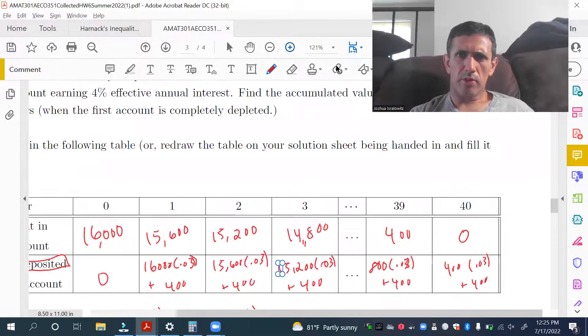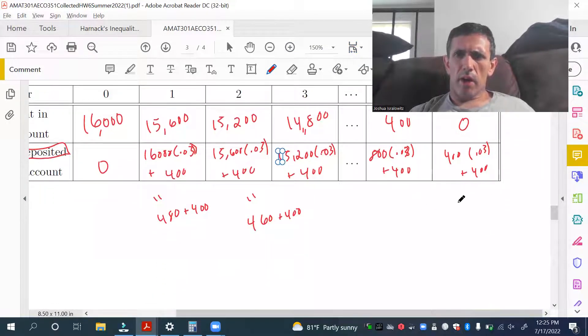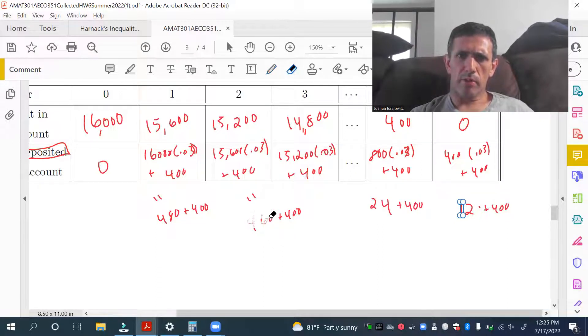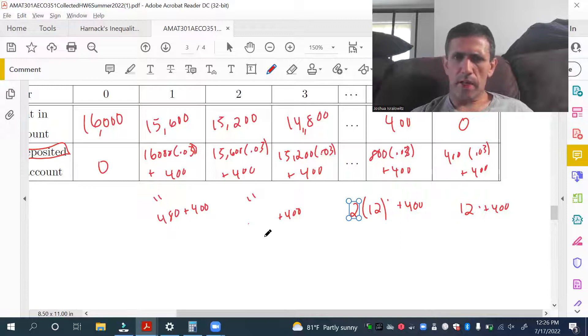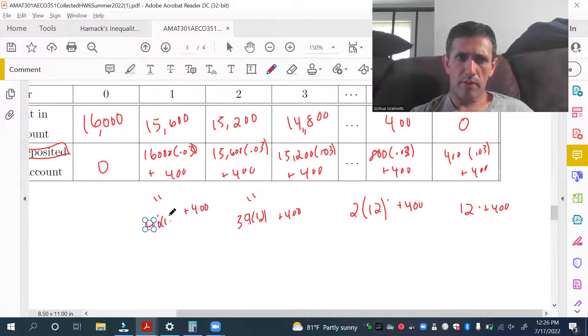And we keep going. This is 15,200 times 0.03, plus 400. The prior year would be 800. So, this is 800, 0.03 and 400. I really should make this bigger, so I can write this a little clearer. Well, right, so this is 400. Oh, sorry. Working backwards, this is 12, plus 400, 24, plus 400. And keep going. This is going to be, sorry. This is, this is 12, but it's two times. Two times 12. I feel like I can go backwards or forwards here. So this is going to be 39 times 12. And then this is 30 times 12. Sorry, 40 times 12.